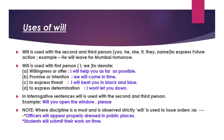Now we will start learning about particular modals and their uses, beginning with 'will'. As we know, 'shall' and 'will' are the helping verbs of the future tense. 'Shall' is always used with the first person — with 'I' or 'we' — and 'will' is always used with the second and third person. So the first point: 'will' is used with the second and third person — you, he, she, it, they, or a name — to express future action.